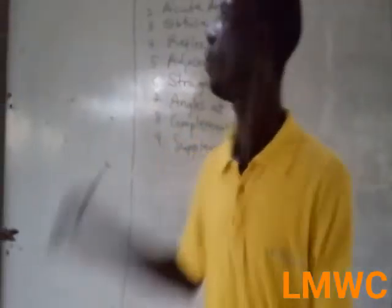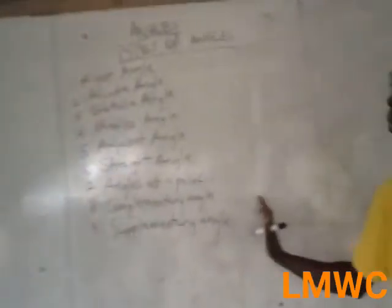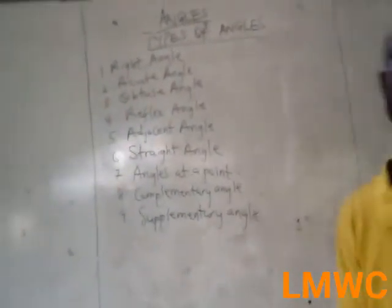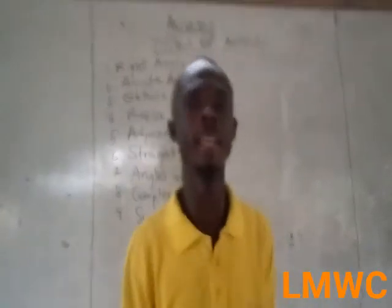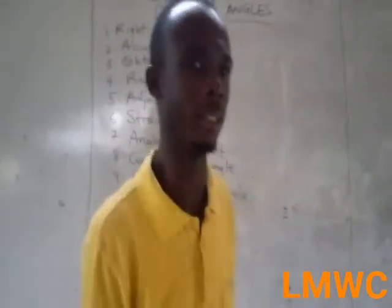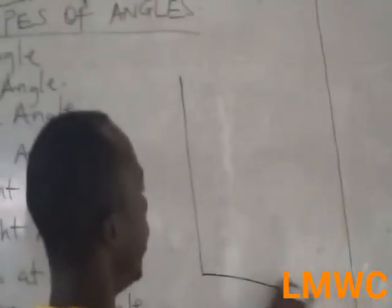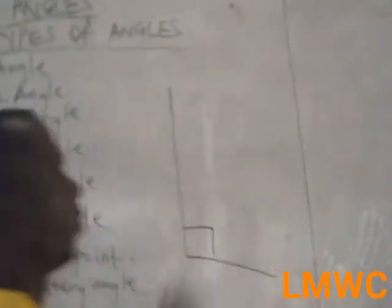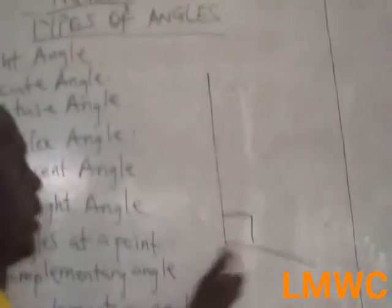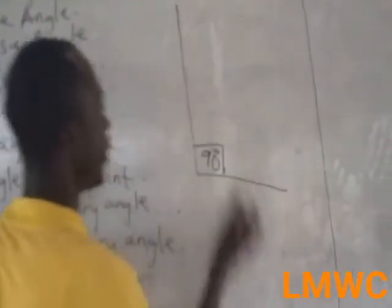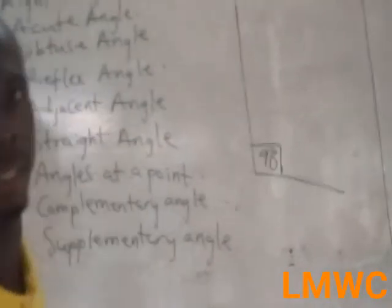When we say right angle, a right angle is an angle equal to 90 degrees. This is the symbol for right angle — a small square — representing 90 degrees.